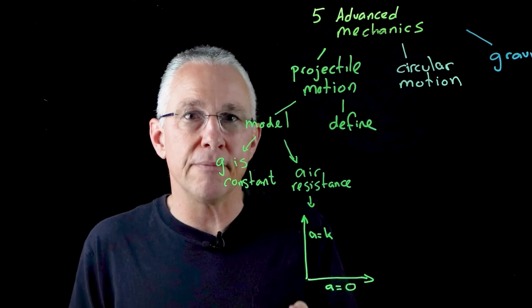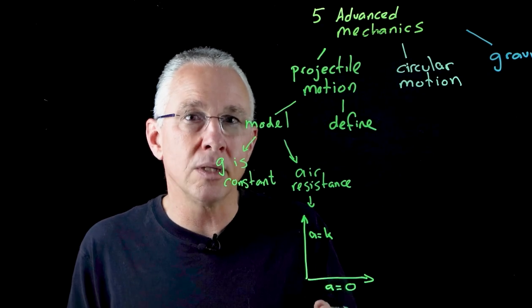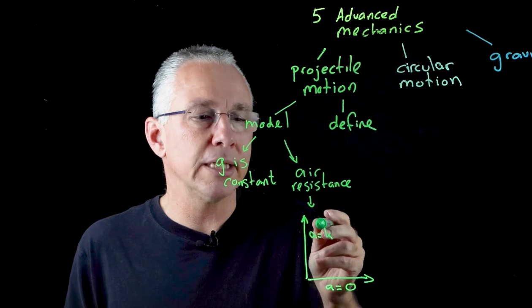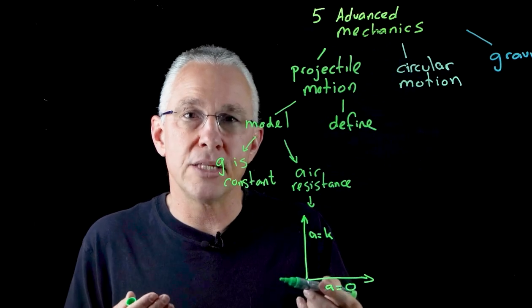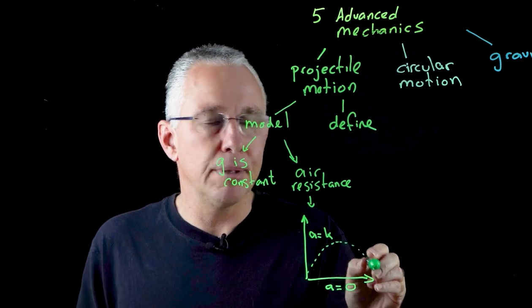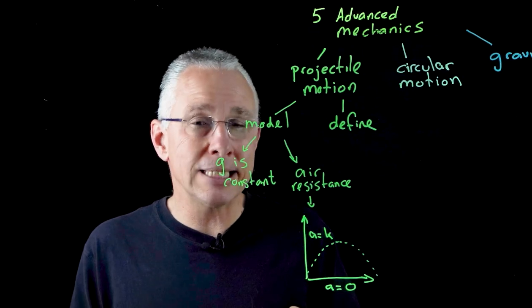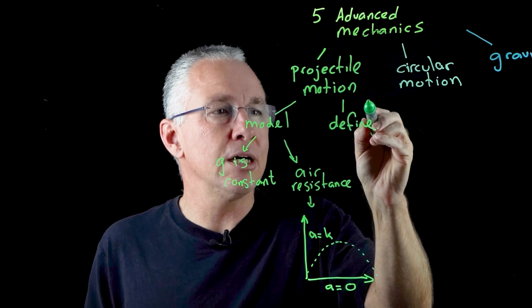What that means is most projectile motion situations have acceleration of negative 9.8 meters per second squared. But it doesn't have to be that. For example, if I have a charge moving through an electric field at an angle, I will get projectile motion, but the acceleration will be determined by the charge and the force it experiences. As a result of those two things, we get our classic parabola, which is mathematically verified by our analysis.